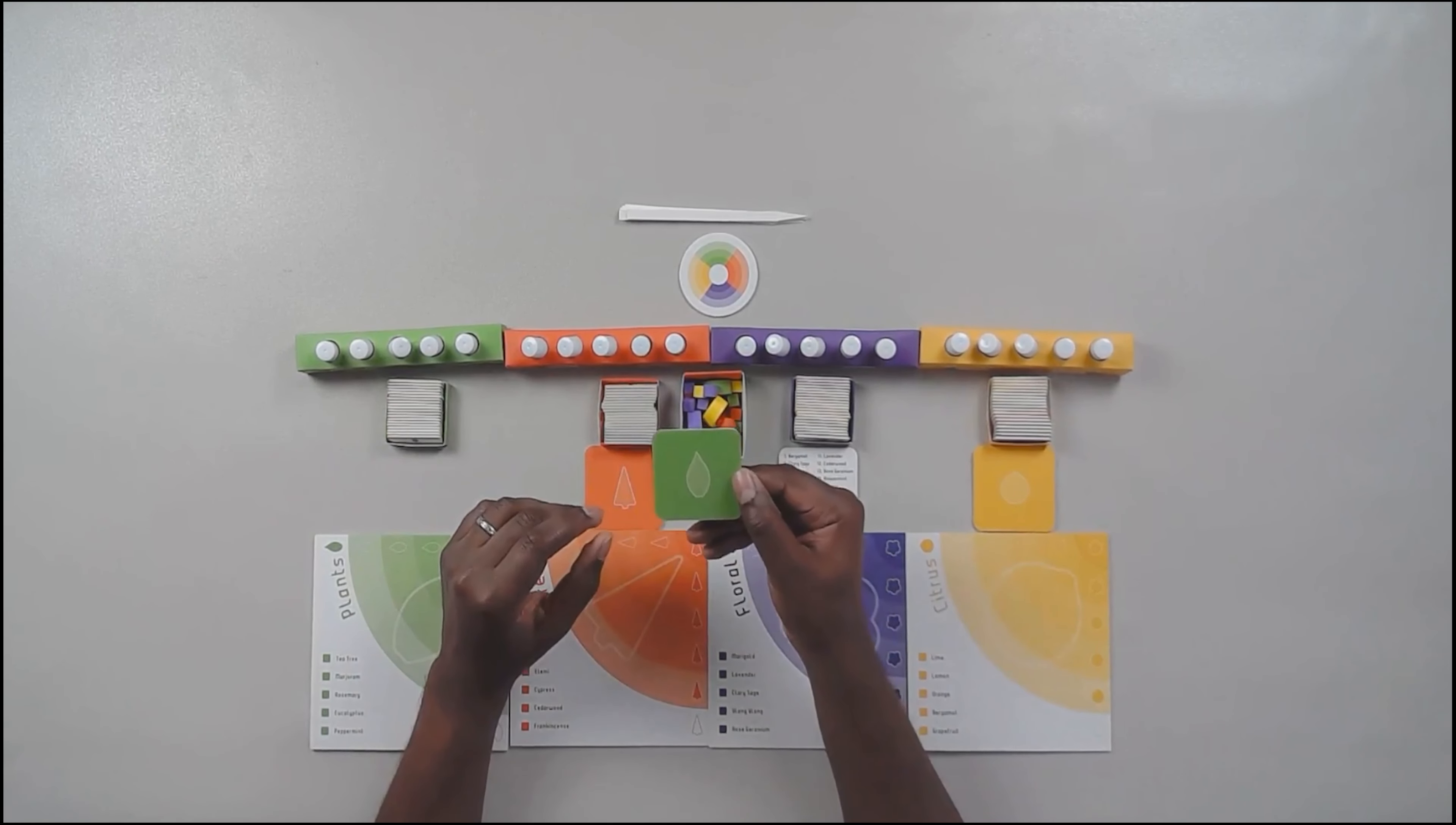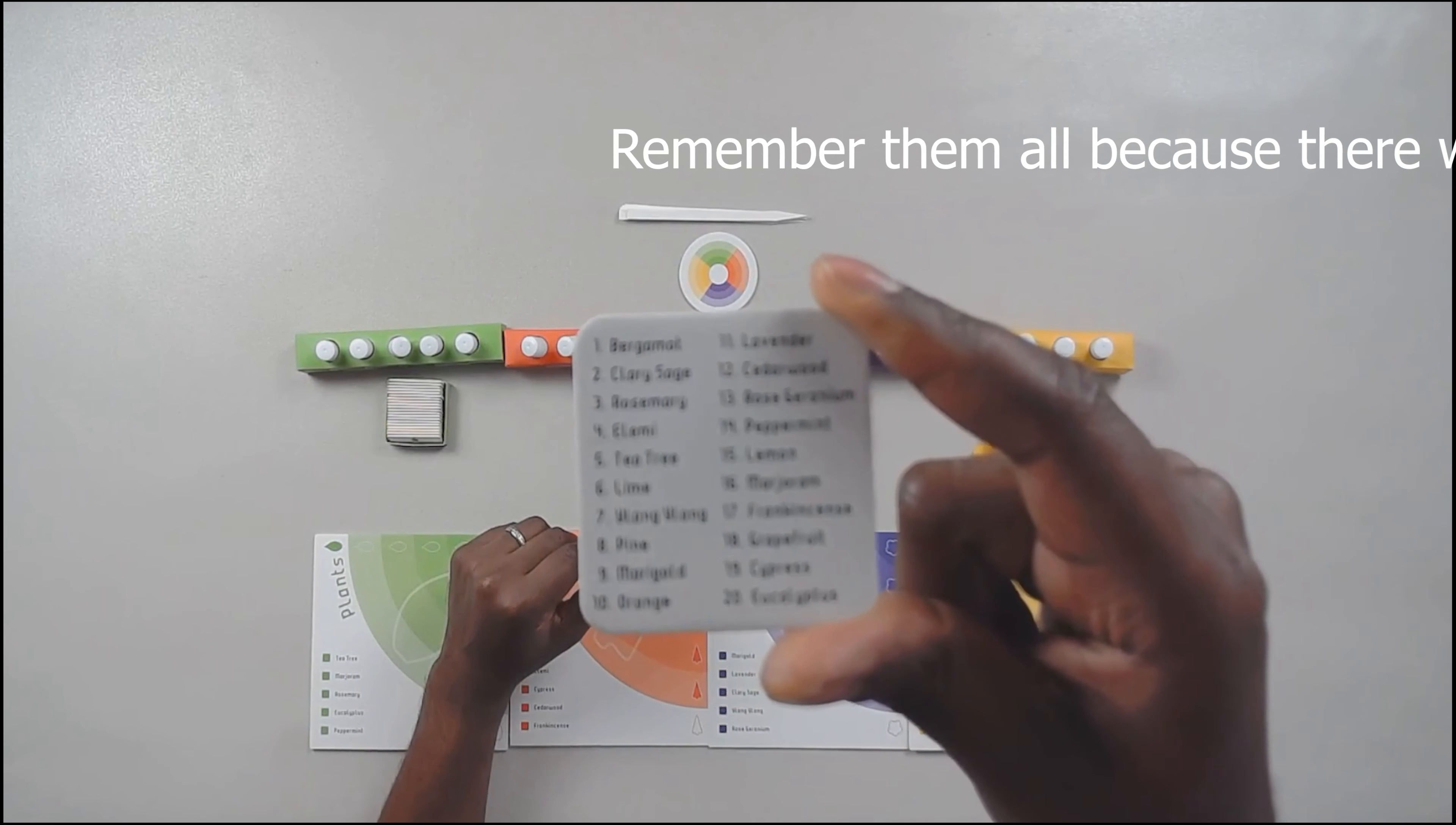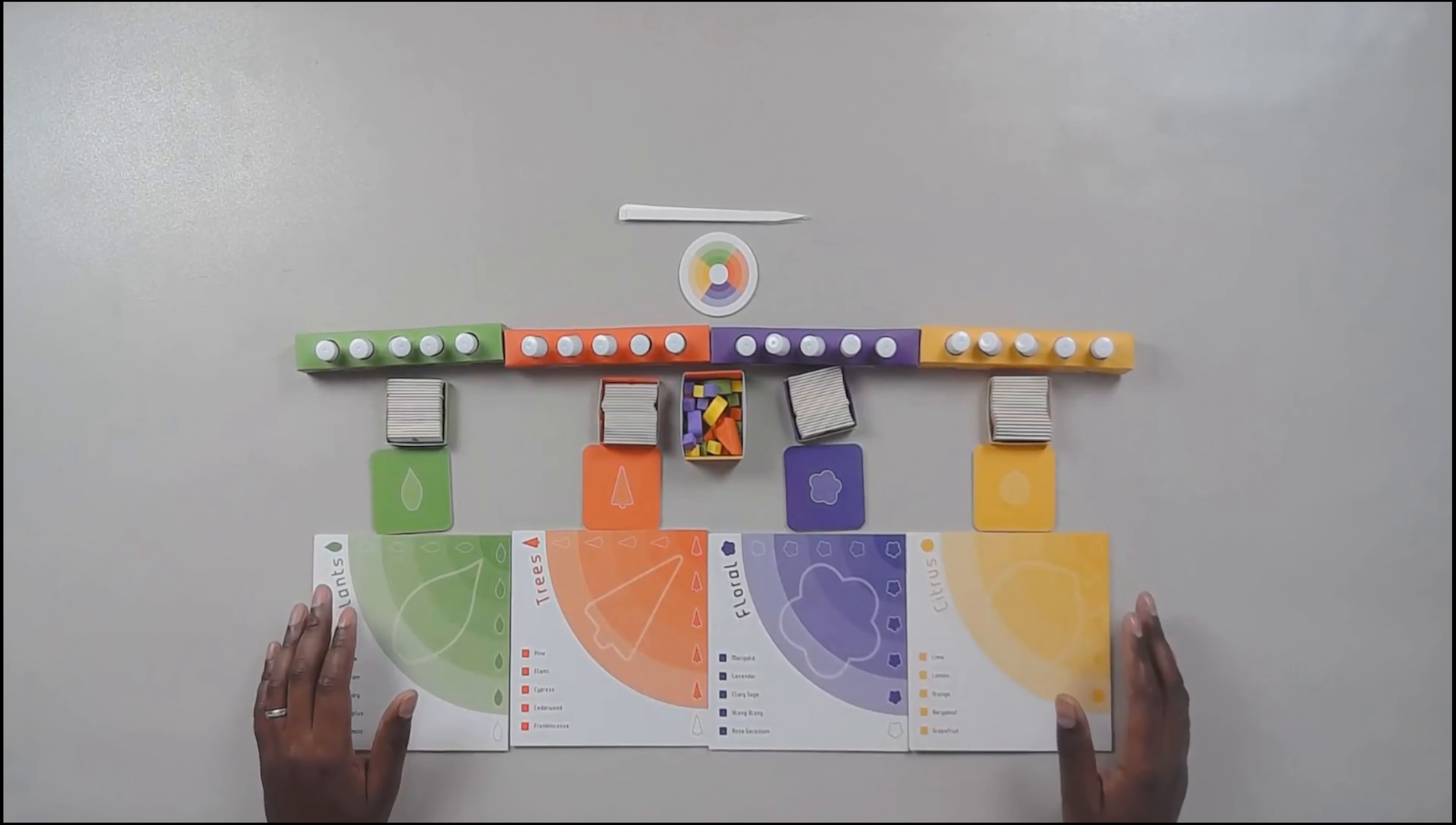There's also going to be four tokens that list the 20 different types of scents. And there really are 20 of them. I just flipped over two so you can see, but they all have their respective icons on them, but they all list the exact same scents.